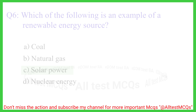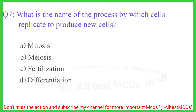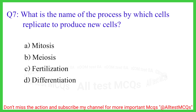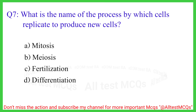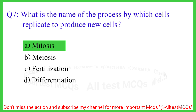Question number 7. What is the name of the process by which cells replicate to produce new cells? The correct answer is option A, mitosis.